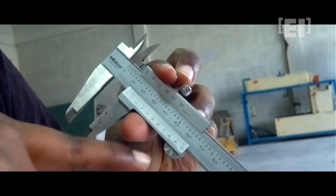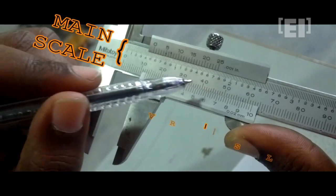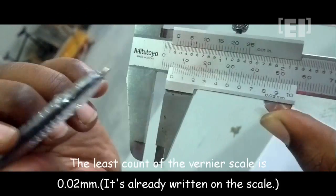We'll put an object in between these lower jaws. This is the vernier scale with 50 divisions and this is the main scale with 200 divisions. Apart from having the inch scales on both, we'll use the millimeter scales now.